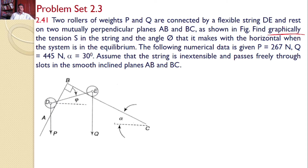We need to solve this problem graphically, so first I will discuss how to do that. Let us take roller D, which is placed on plane AB and is connected to roller E through string DE. The forces acting on roller D are: first, the self weight P, which is 267 N.